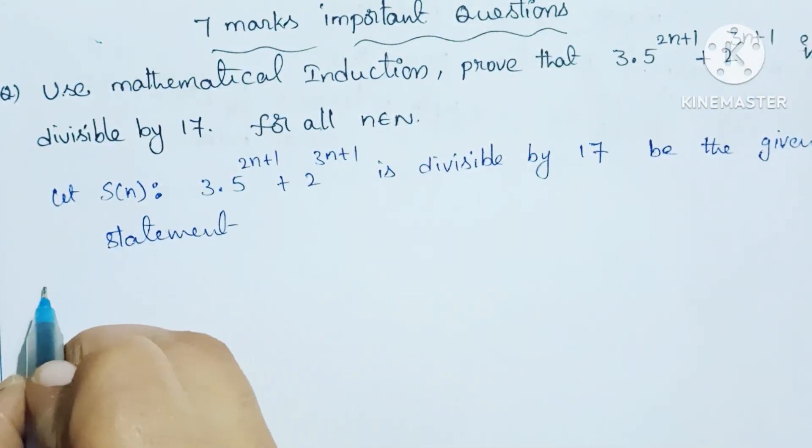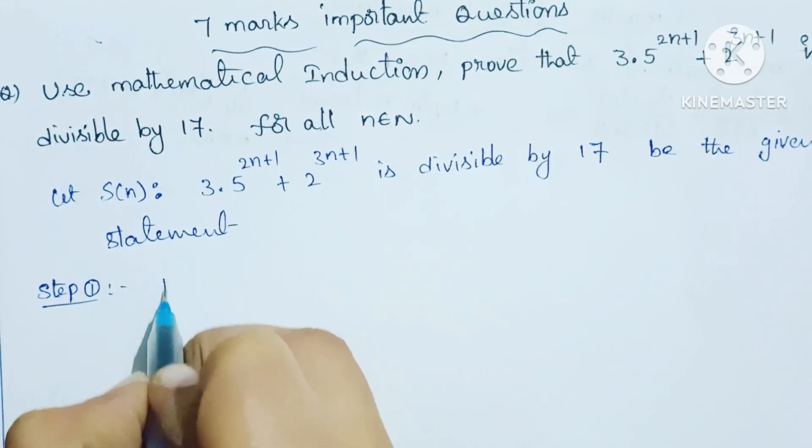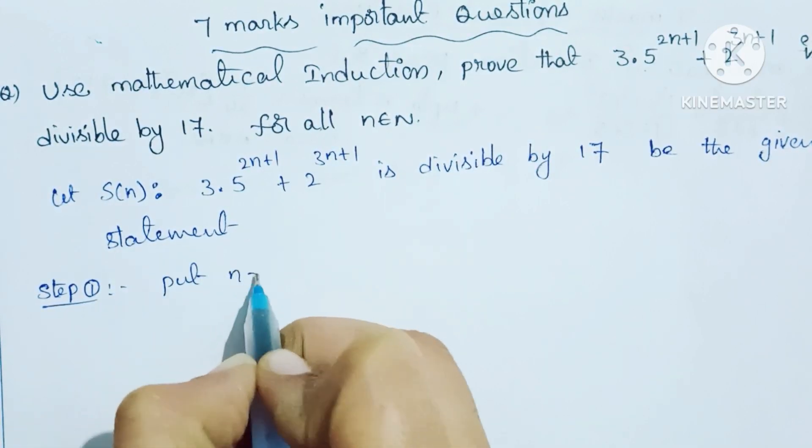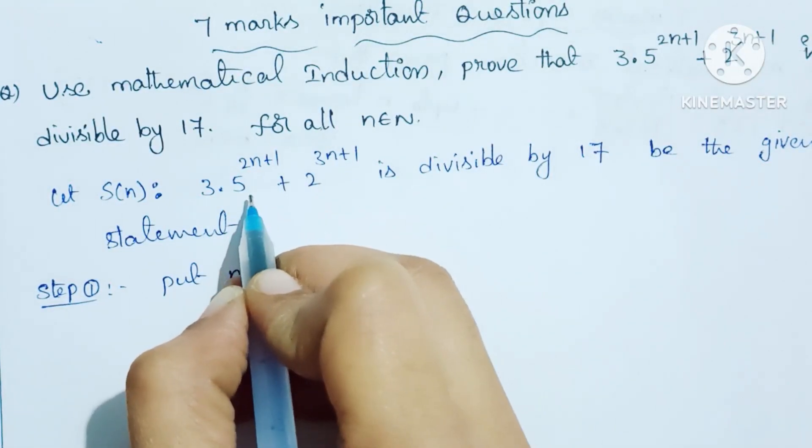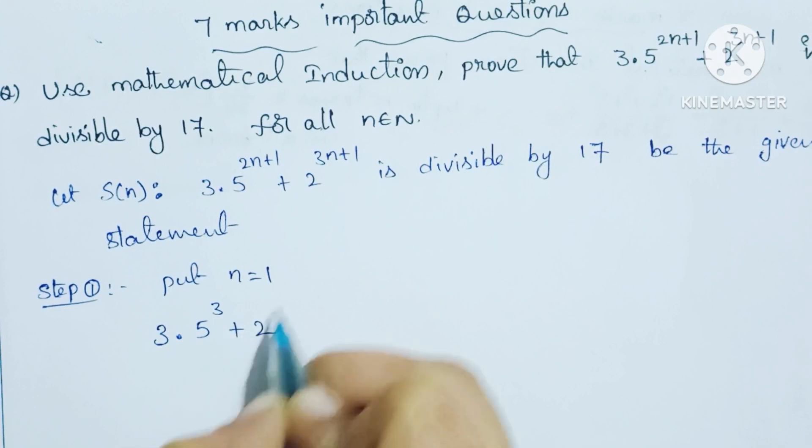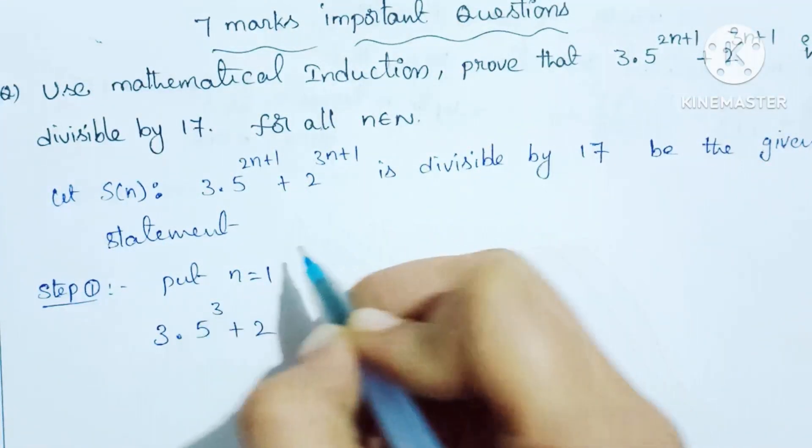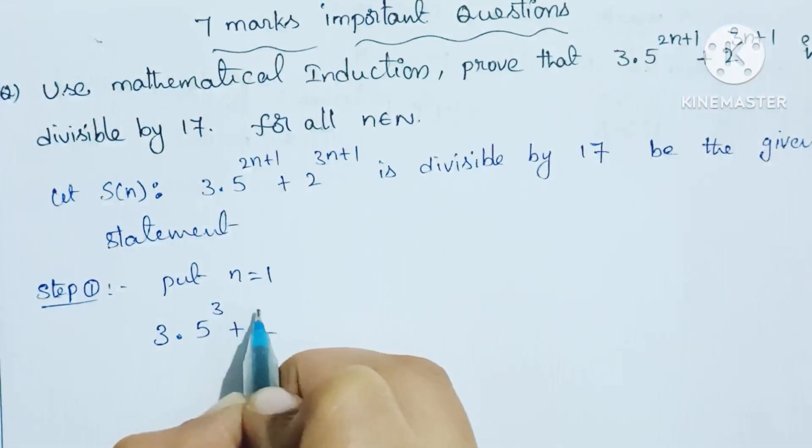Step 1: Put n equal to 1. We need to verify this condition is divisible by 17. So, 3 into 5 power 2 into 1 plus 1, which is 3, plus 2 power 3 into 1 plus 1, which is 4.